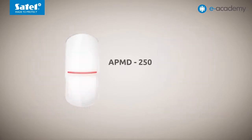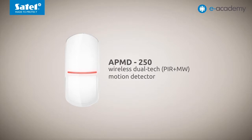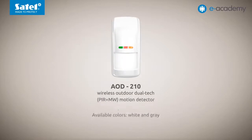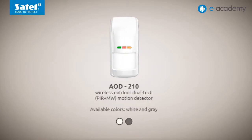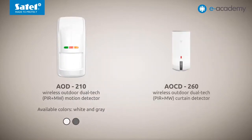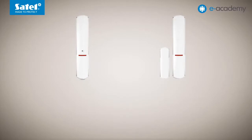The third model of the detector, which has the same outward appearance as the first two, is the APMD250 wireless dual technology motion detector. The next two detectors are the AOD210 outdoor dual tech motion detector and the AOCD260 outdoor dual tech curtain detector. These are new versions of the well-known AOD200 and AOCD250 models.